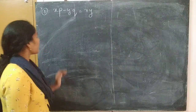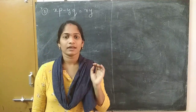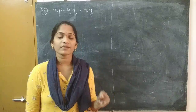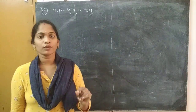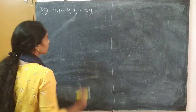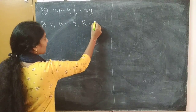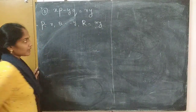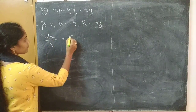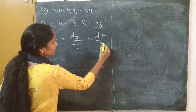The first problem is that xp minus yq is equal to xy. This is our given PDE. The first procedure for any Lagrange's method is to compare with the quasi-linear PDE and write what is P, what is Q, what is R. So this is Pp plus Qq equals R, where P equals x, Q equals minus y, R equals xy. The next step is to write the Lagrange's auxiliary equation: dx by P, that is x; dy by Q, that is minus y; dz by R, that is xy.